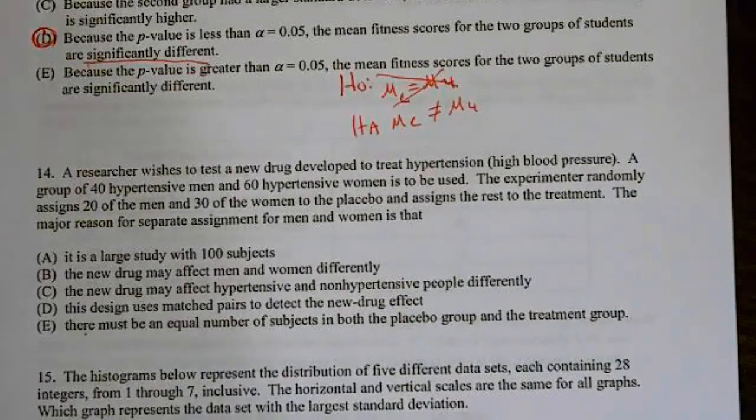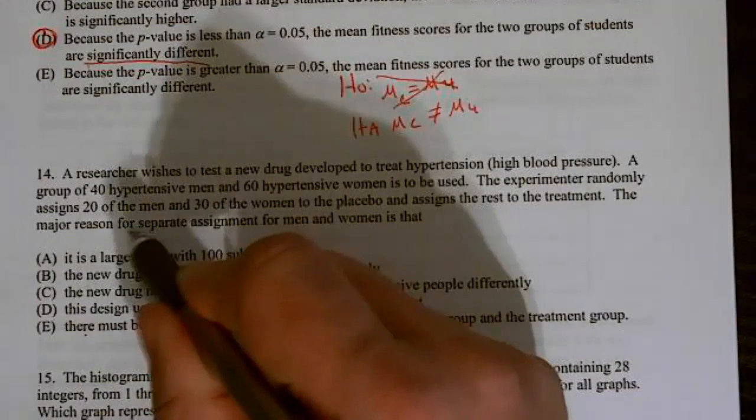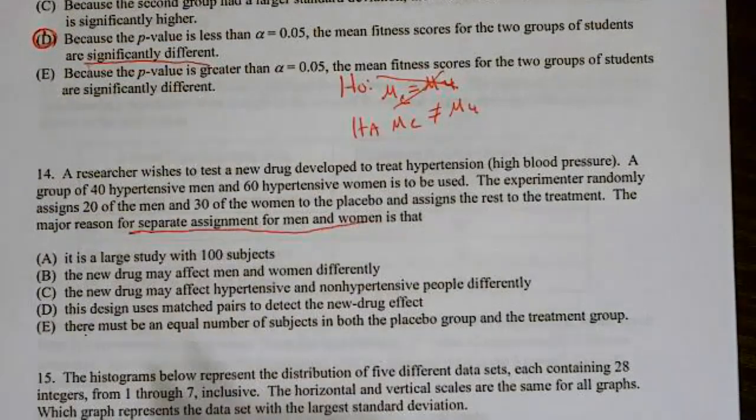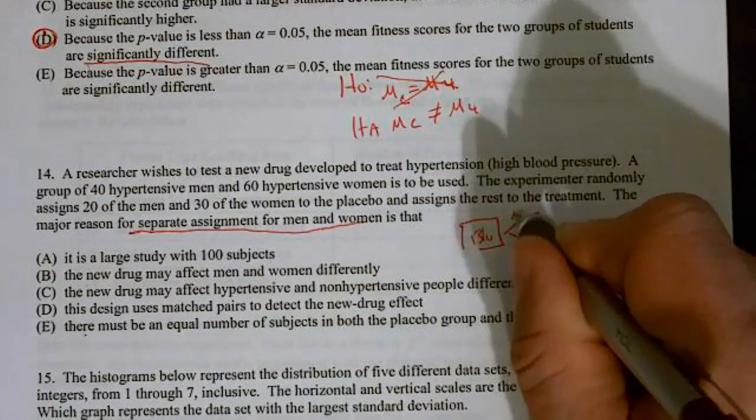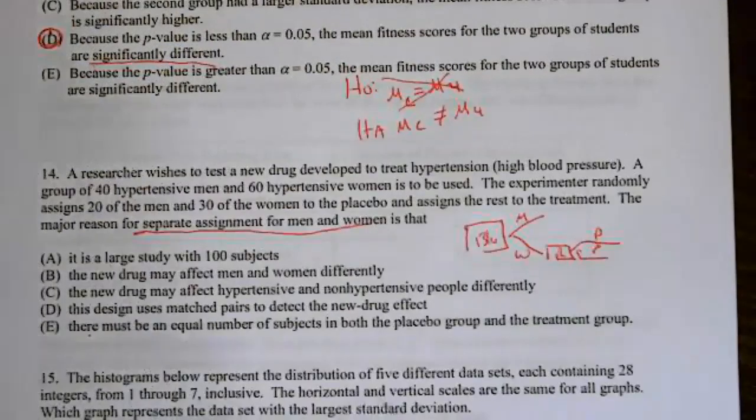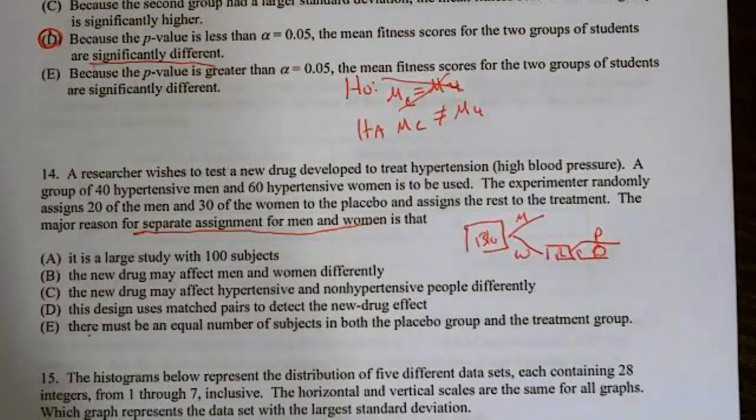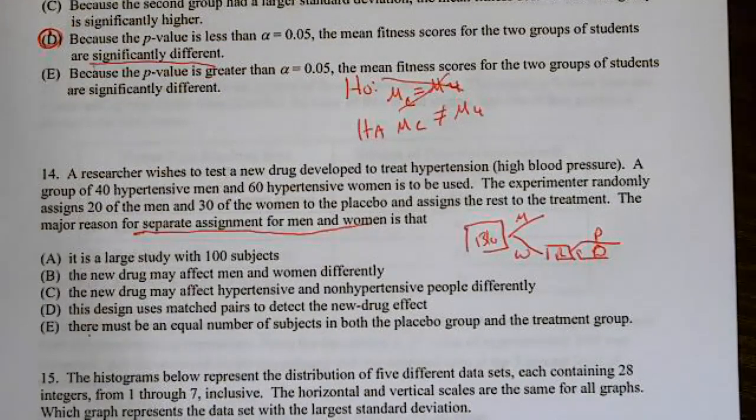A researcher wishes to test a new drug developed to treat hypertension, high blood pressure. A group of 40 hypertensive men and 60 hypertensive women is to be used. The experimenter randomly assigns 20 of the men and 30 of the women to the placebo and the rest to the treatment. We broke them into two groups, and we're assigning treatment. So this is an experiment. So we blocked. We have men and women. And here we randomly assigned placebo and drug. And we did the same for the men. So block. Why do we block? We block because there is a characteristic that we think might impact it.